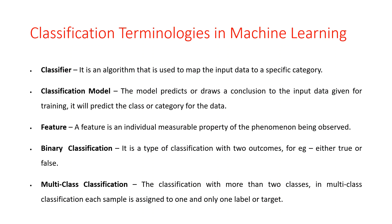The third is a feature — a feature is an individual measurable property of the phenomenon being observed. The next is binary classification — it is a type of classification with two outcomes, for example, true or false, or we can say the email is spam or not spam. The next is multi-class classification — classification with more than two classes, where each sample is assigned to one and only one label or target.